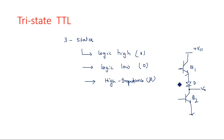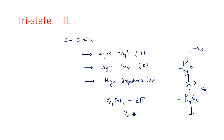In tri-state TTL, the construction is made in such a way that Q1 and Q2 both become off. As both transistors Q1 and Q2 are in off state, the output V0 is high impedance state Z. This situation occurs only in tri-state TTL, and I will explain the purpose of this impedance in the coming slide.